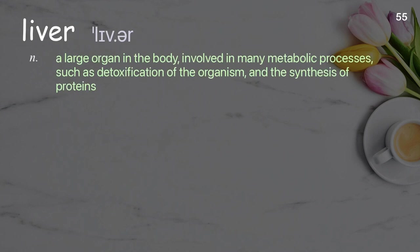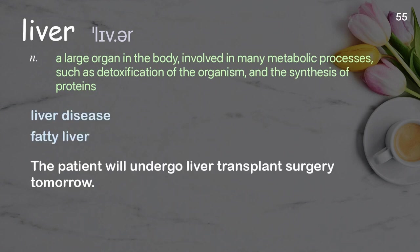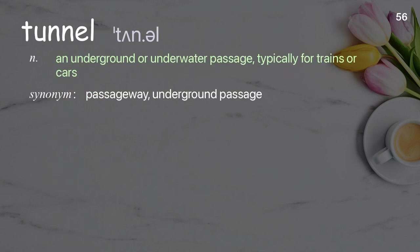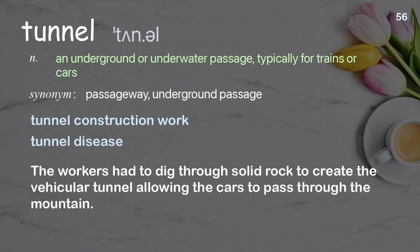Liver: a large organ in the body involved in many metabolic processes such as detoxification of the organism and the synthesis of proteins. Examples: liver disease, fatty liver. The patient will undergo liver transplant surgery tomorrow. Tunnel: an underground or underwater passage, typically for trains or cars. Examples: tunnel construction work, tunnel disease. The workers had to dig through solid rock to create the vehicular tunnel, allowing the cars to pass through the mountain.